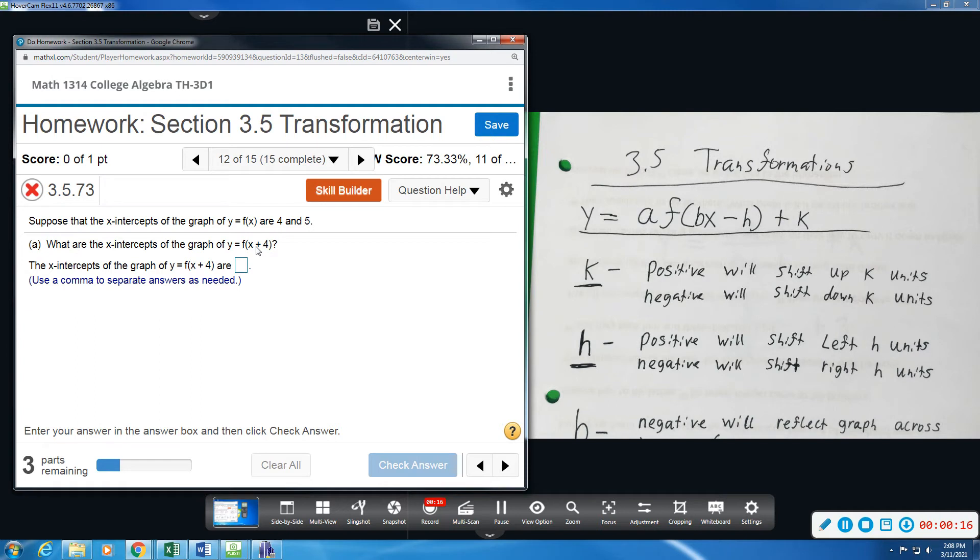What are the intercepts of the graph of f of x plus 4? So we need to think about what does this plus 4 do to the graph. The plus 4 positive will shift the graph left. So it would be the same idea as taking my x-intercepts and moving them to the left 4 units or subtracting 4.